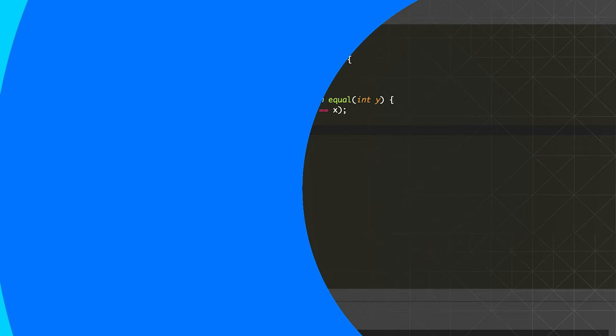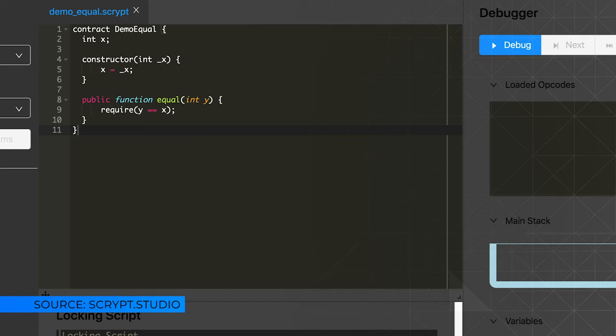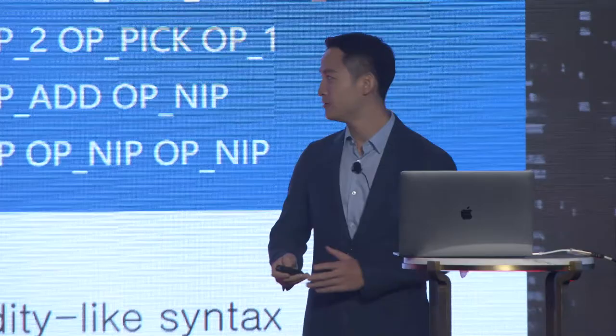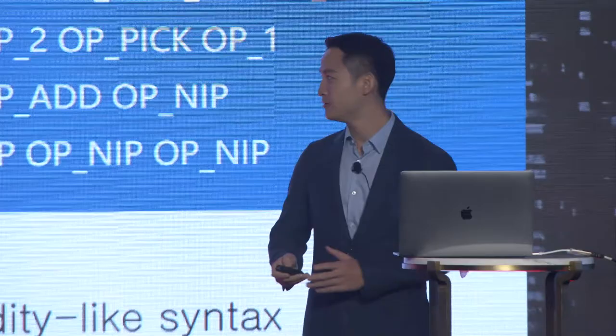How can developers easily integrate sCrypt with their existing applications? First, I built not only the compiler but also an integrated development environment called an IDE. It's web-based, so you don't have to install anything. People can just log in to the script.studio website today and start programming and testing right away. They've also built a graphical user interface so other people can use it without needing to understand the internals. Second, there will be an SDK, so developers can integrate it as a library — just import it into your app, compile down to native script, put it in your transaction, and it's like any other Bitcoin transaction.